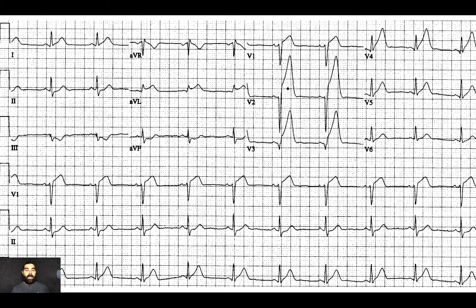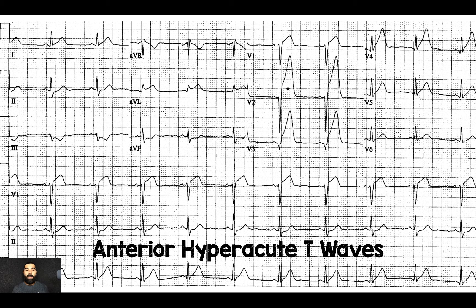This is the EKG you get. You can see there are ST elevations in I and AVL, and reciprocal depressions in the inferior leads II, III, and AVF. But what really jumps out at me is V2 through V4 — those T waves are not normal. Those are hyperacute T waves, and they can sometimes be the first sign of acute ischemia in a patient having an occlusion myocardial infarction. Here you can see the anterior hyperacute T waves.